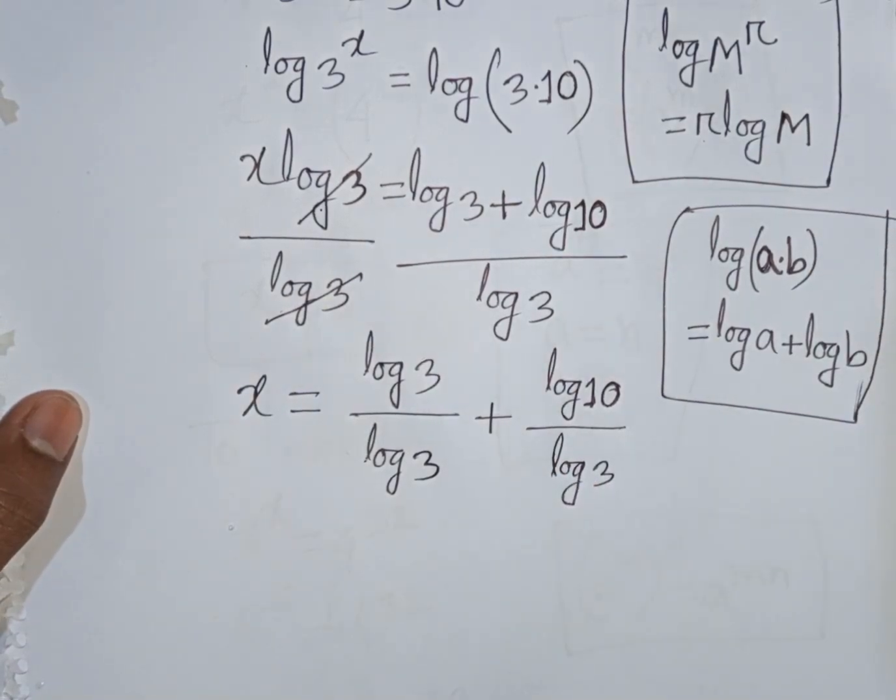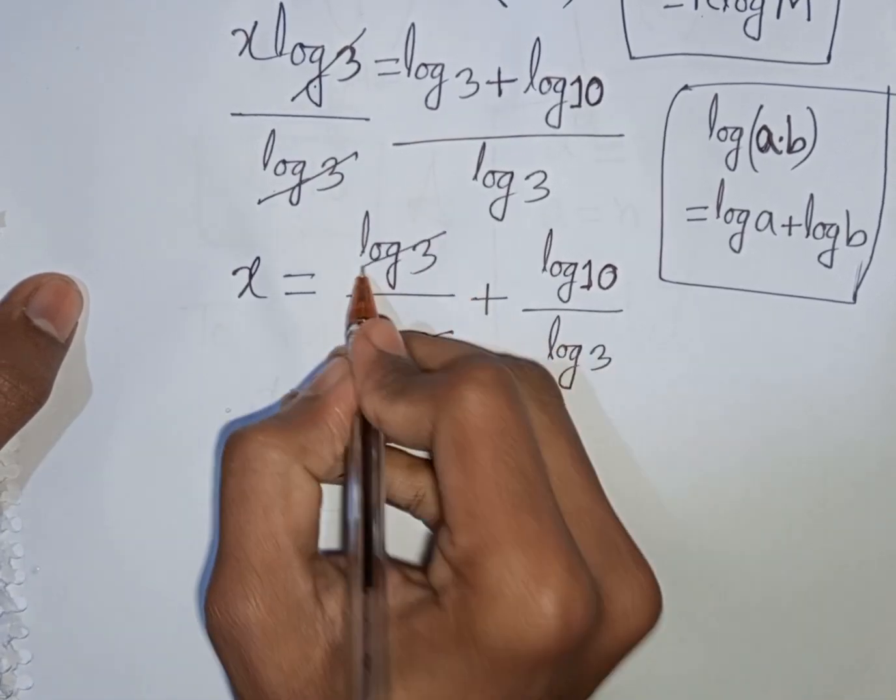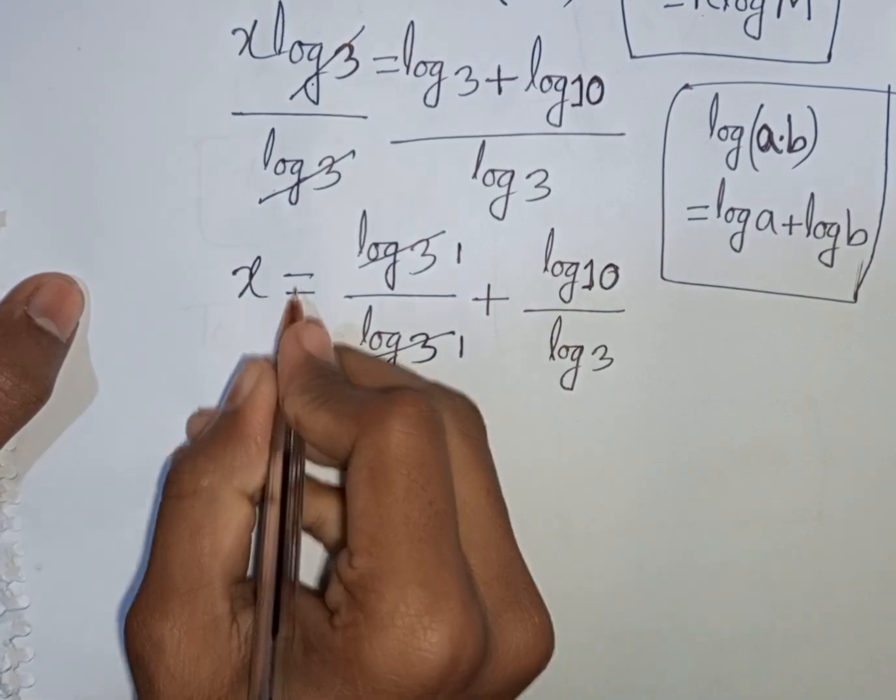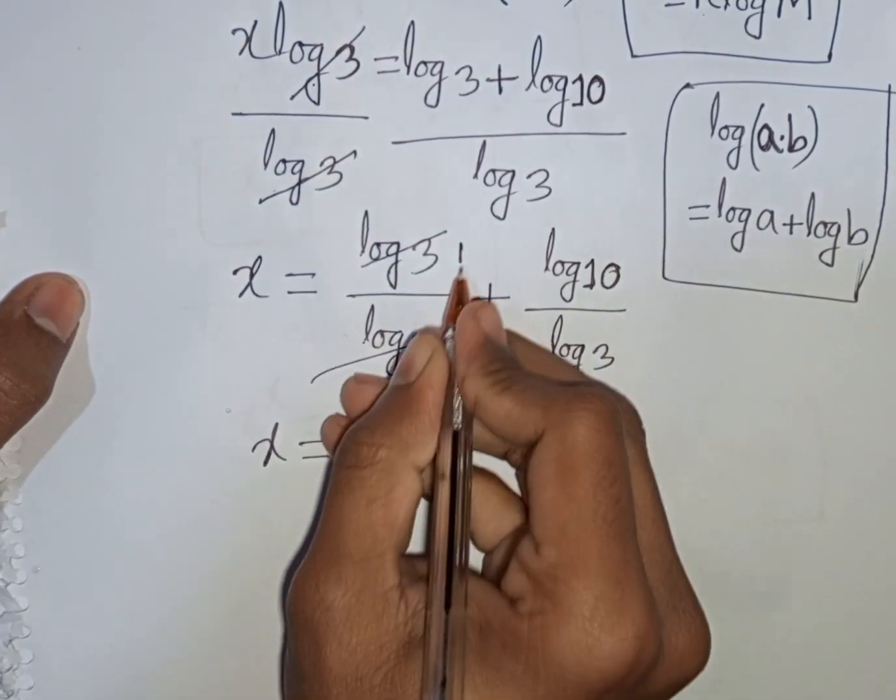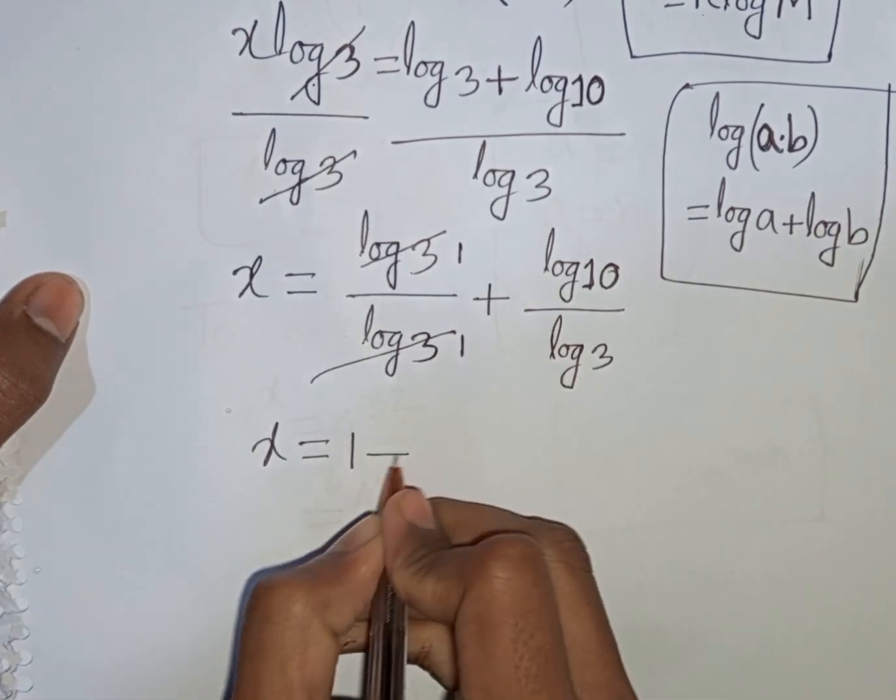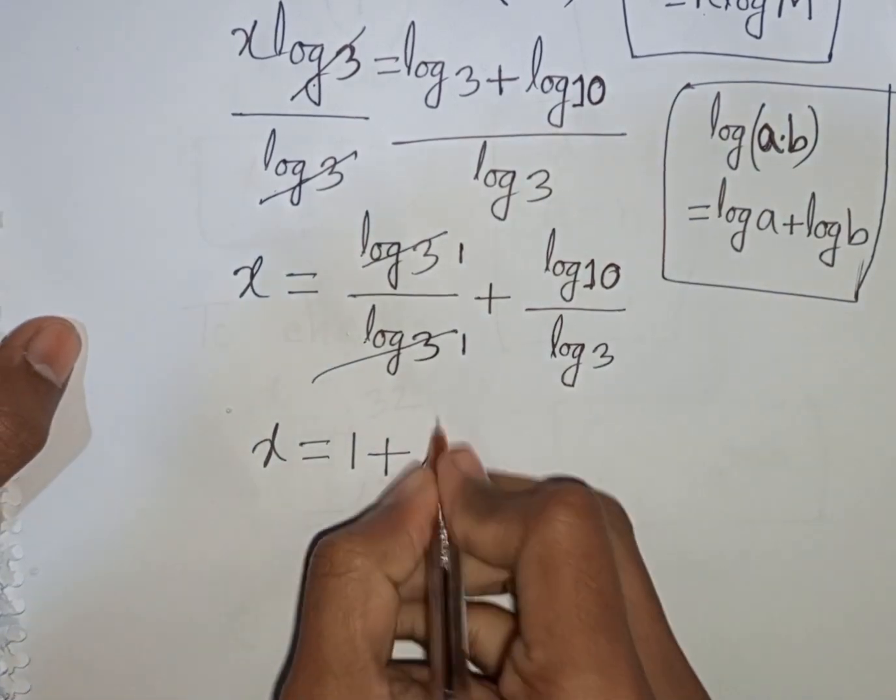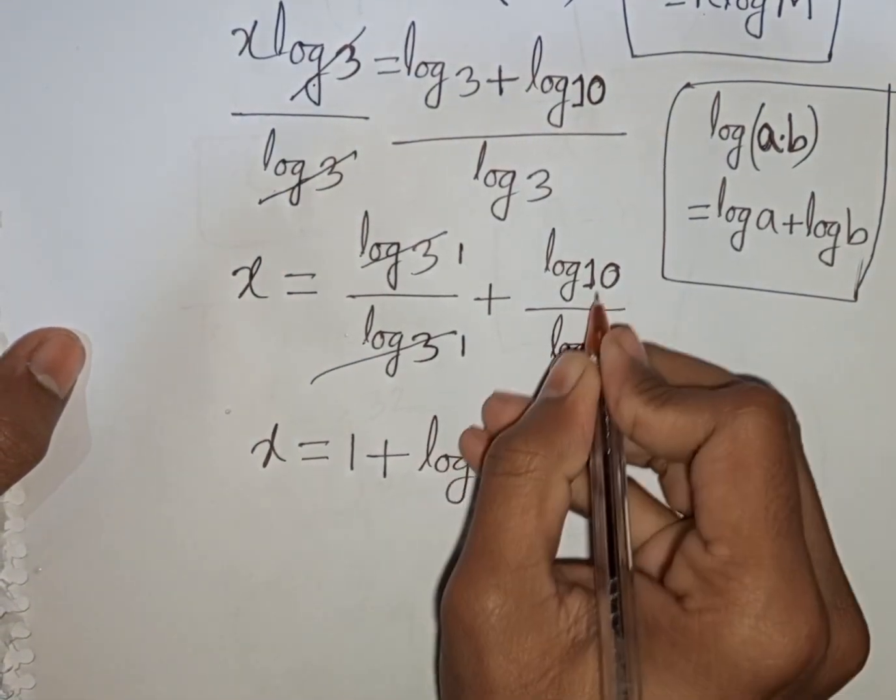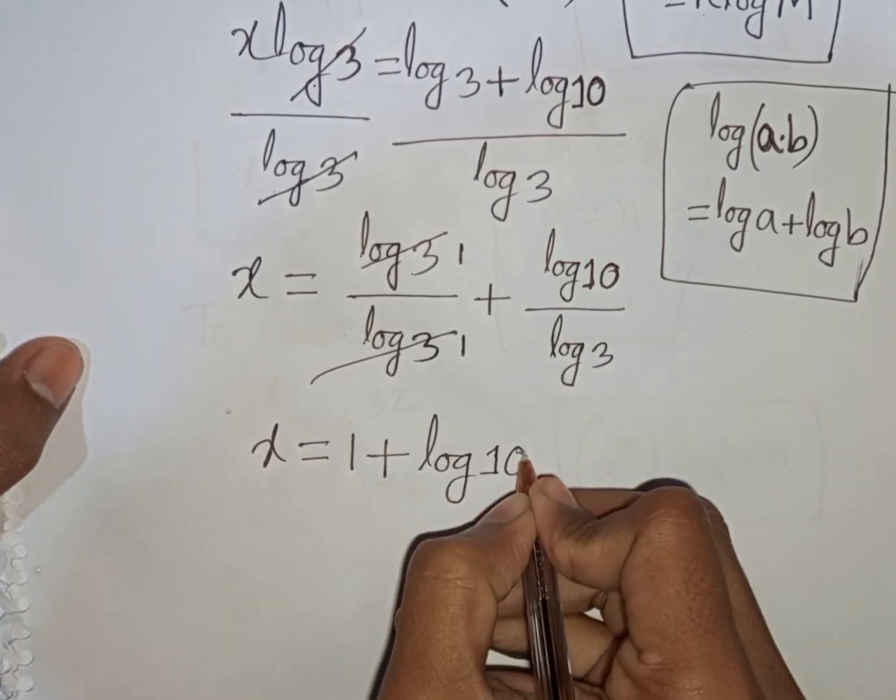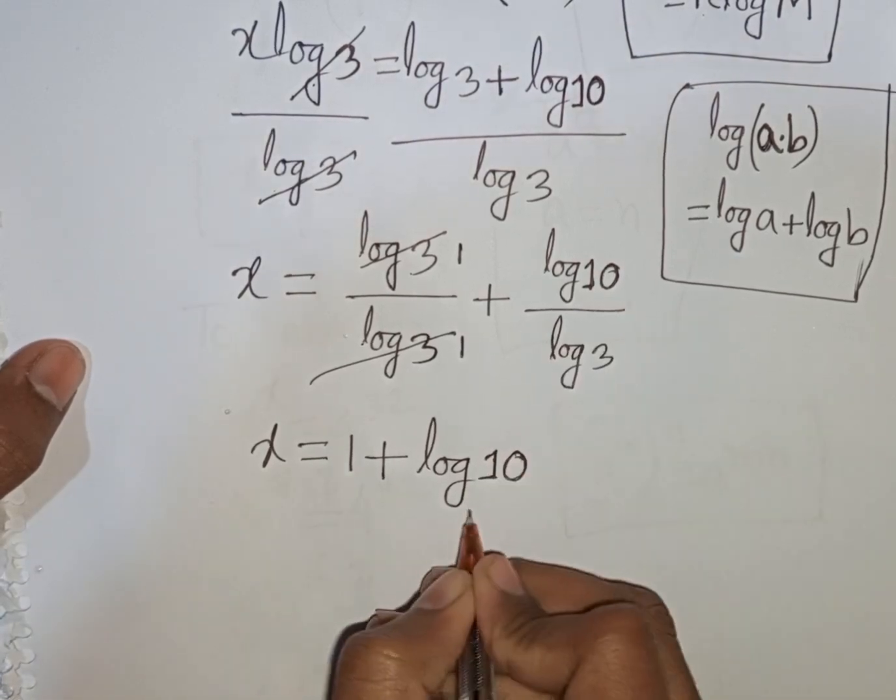Now we see this log 3, this log 3 will be cancelled. So we can write here x is equal to 1 divided by 1, that means it will be 1, then plus log 10 divided by log 3. That means it will be log 10 base of 3.